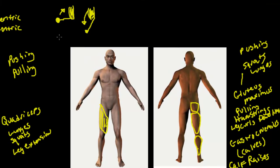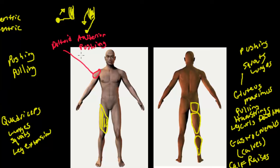Let's move up to the upper body. Let's talk about the deltoid. The deltoid is a tricky muscle. The anterior deltoid — the front part, facing towards us — is a pushing muscle. Push-ups, bench press, and shoulder press all utilize the anterior deltoid, causing it to concentrically contract.